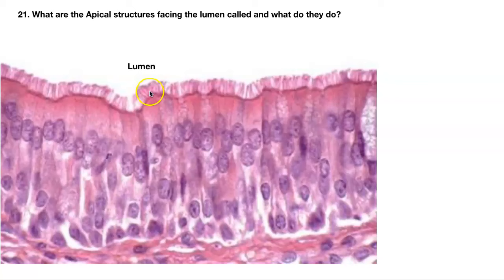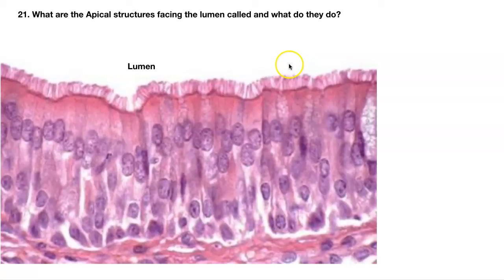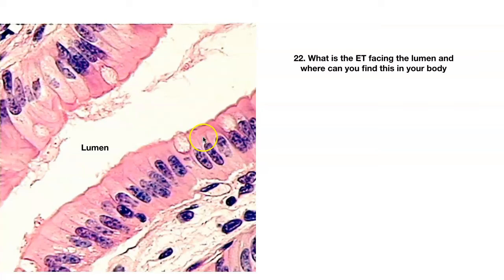The function of simple squamous in blood vessels is to provide a smooth surface for blood to flow over. Number twenty-one — the apical structures facing the lumen are cilia. What do they do? Cilia are motile hair-like extensions that move in one direction, moving whatever is above them in the tube. If there's mucus — we can see a goblet cell here — they move the mucus away from the lungs and up toward your mouth to swallow. Remember: nicotine paralyzes the cilia, so they stop functioning, which is why smokers cough every morning to clear out that mucus.